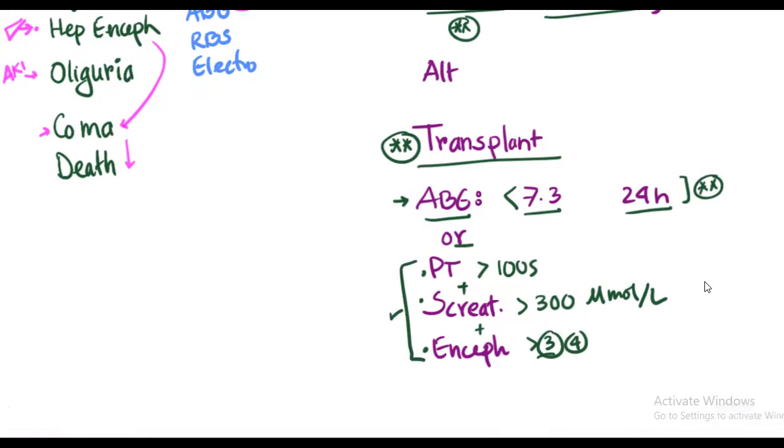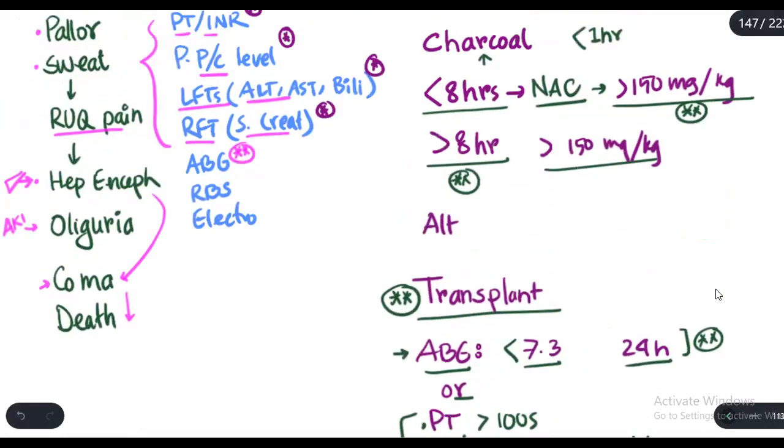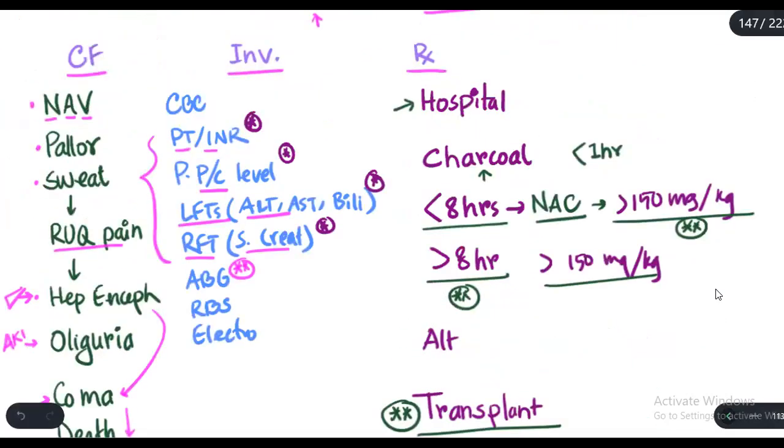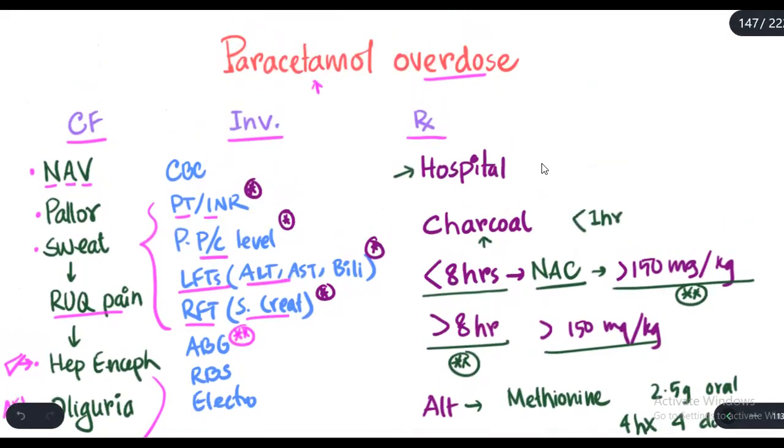What is another alternative for NAC? An alternative for NAC is methionine. You can also use methionine, and the dose is 2.5 grams orally every 4 hours for 4 doses. So that is the basic idea about paracetamol overdose, the clinical features, investigations, and treatment.